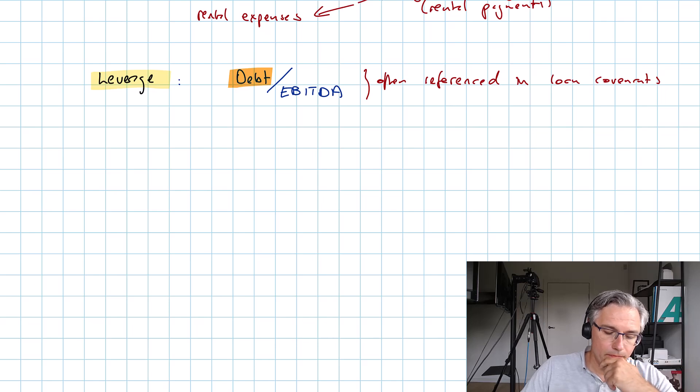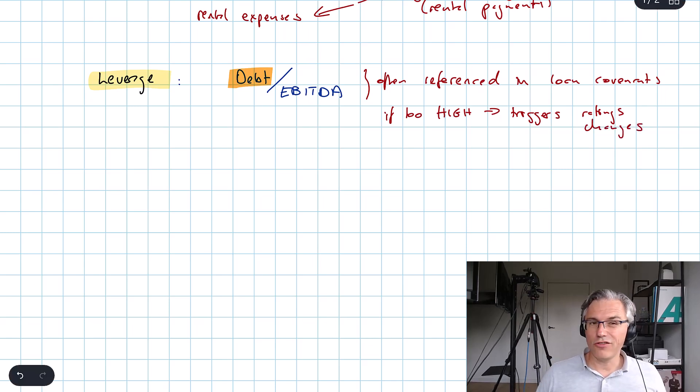And if you breach the level of debt to EBITDA, if this becomes too high, it typically triggers certain actions from the loan provider, from the bank, but also triggers ratings changes potentially, because ratings agencies also look at the relationship of debt to EBITDA.